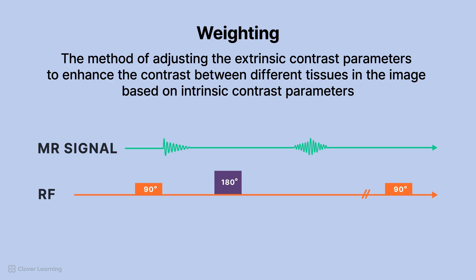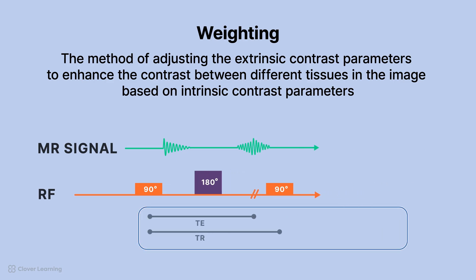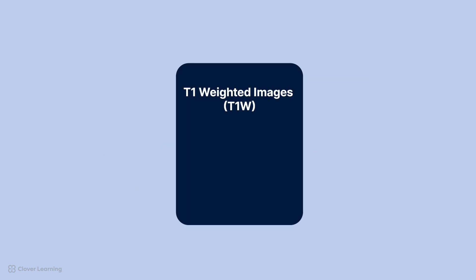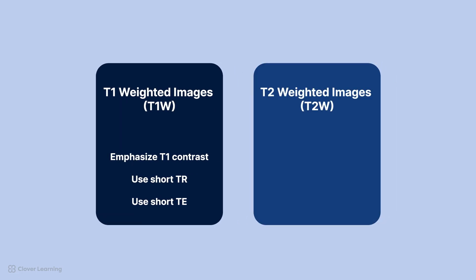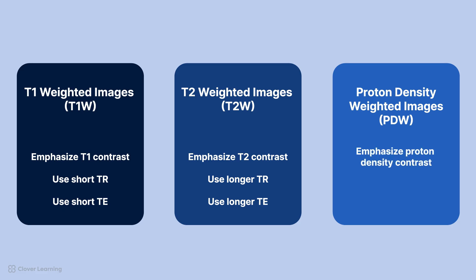In summary, weighting is the method of adjusting the extrinsic contrast parameters to enhance the contrast between different tissues in the image based on intrinsic contrast parameters — in other words, weighting is used to create more contrast between tissues with different properties. T1-weighted images emphasize T1 contrast and use a short TR and a short TE. T2-weighted images emphasize T2 contrast and use a longer TR and a longer TE. Proton density-weighted images emphasize proton density contrast and use a longer TR and a shorter TE.